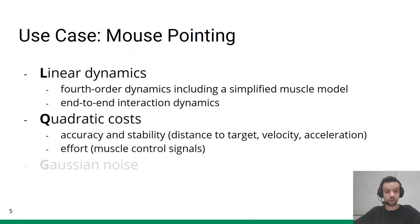Our cost function consists of two parts. To ensure accuracy and stability, we penalize the remaining distance to target as well as velocity and acceleration when the target is reached. As a regularization term, we add effort costs that penalize large muscle control signals at every time step. All these cost terms are squared to obtain a quadratic cost function.